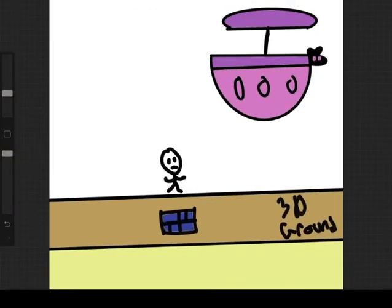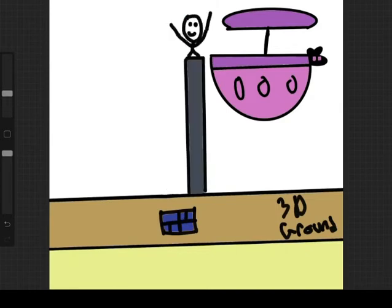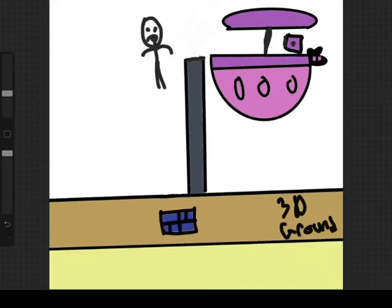But just in case a nasty little shulker gets me and hits me with its little thing, I can aim for the water source and then land in it, and then just go back to the top by using water to get up.